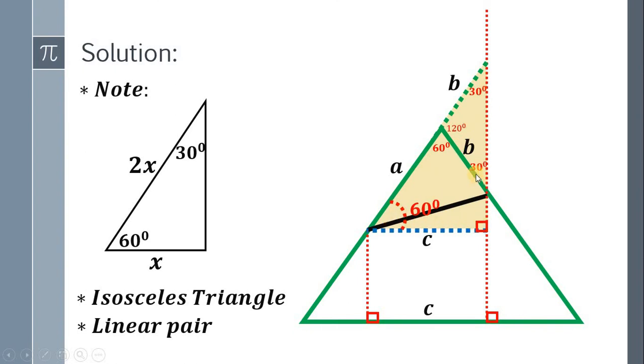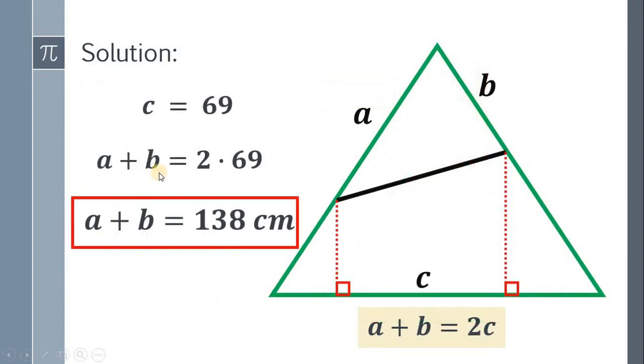Now, the shorter leg is always opposite the 30 degrees. Therefore, the shorter leg must be equal to C. And the hypotenuse is the sum of A and B. Therefore, using this concept, we can say that A plus B, the hypotenuse, is equal to 2 times C or the shorter leg. So, we have A plus B equals 2C. It follows that our answer a while ago, we have A plus B is equal to 138 centimeters. And we're done.